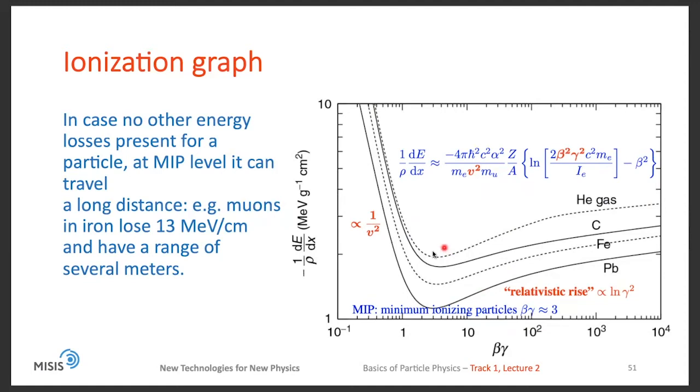What is interesting is that at MIP level, at the minimum ionizing particle level, if a particle doesn't have any other mechanisms of losing energy, then they can travel very large distances. For example, muons in iron lose 13 MeV per centimeter, and therefore can have a range of several meters in iron before they are stopped.